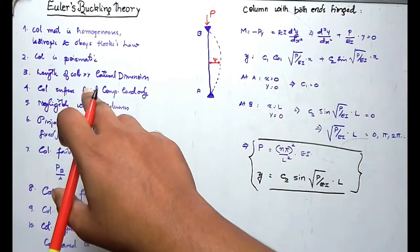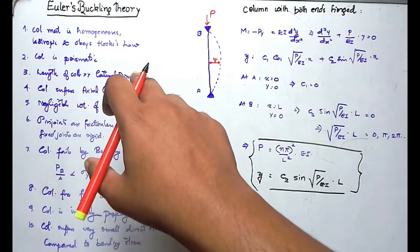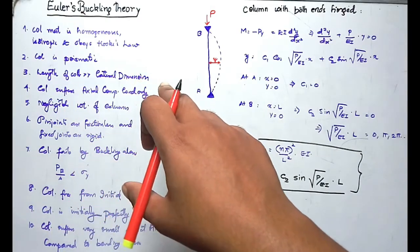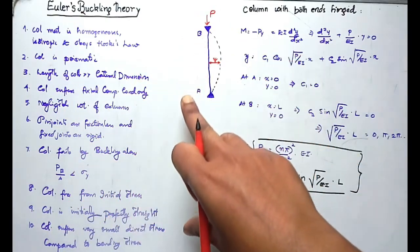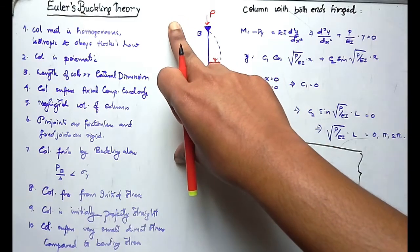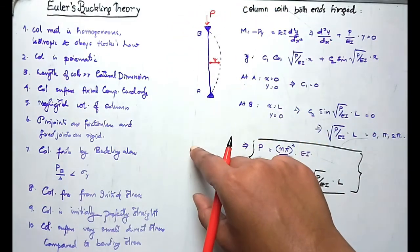The third assumption is that the length of the column should be very much greater than its lateral dimension. This is what makes the column slender, and a slender column buckles correctly.